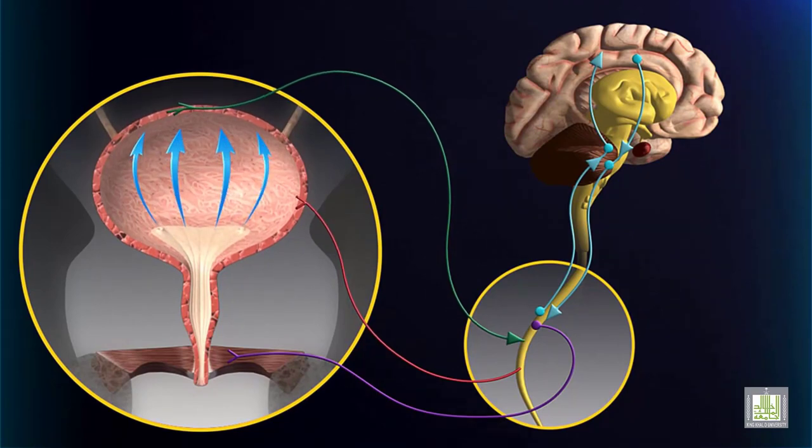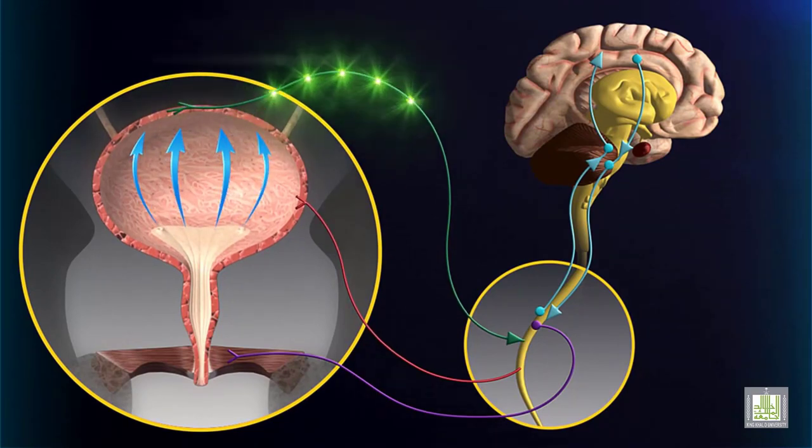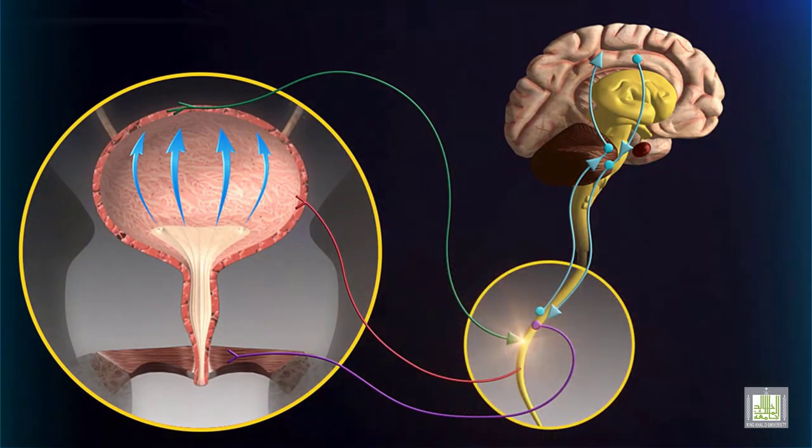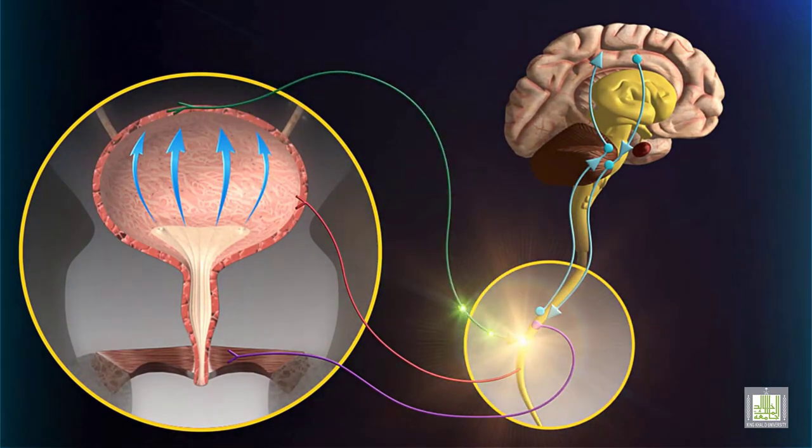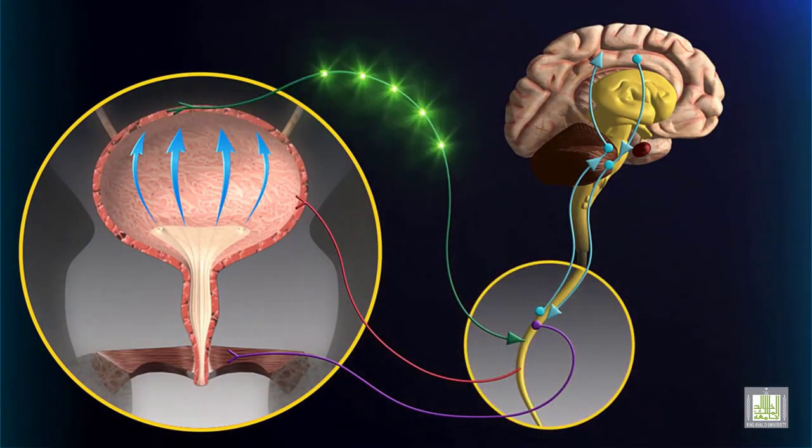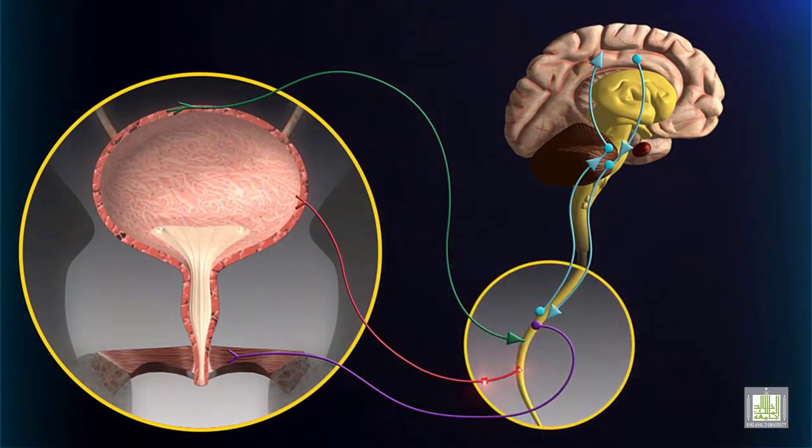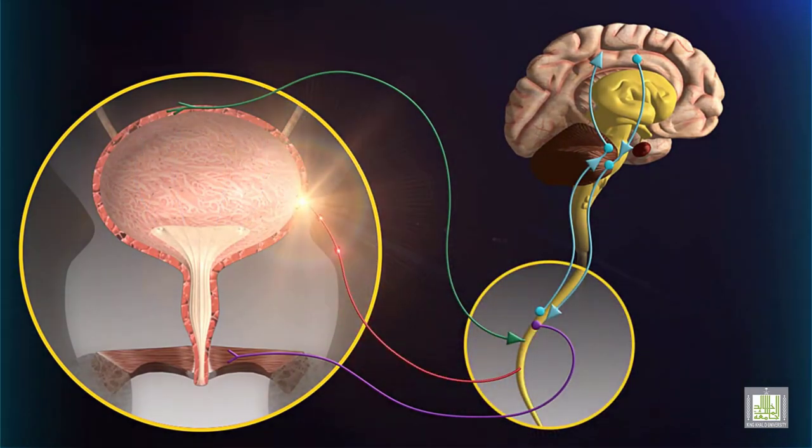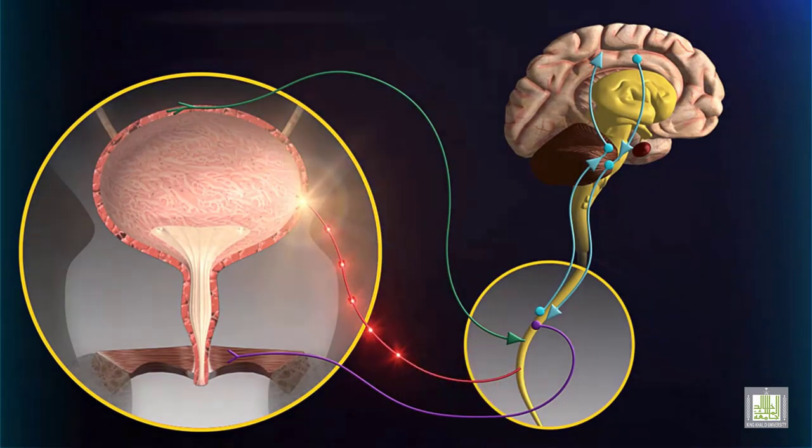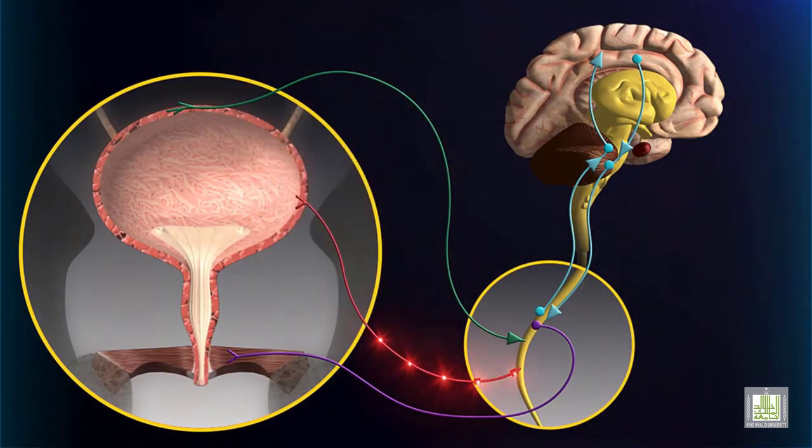When the urinary bladder becomes stretched, there is an increase in the frequency of action potentials carried from the bladder wall to the sacral region of the spinal cord. In response, parasympathetic neurons from the spinal cord to the bladder are activated, and this causes the smooth muscle on the bladder wall to contract.